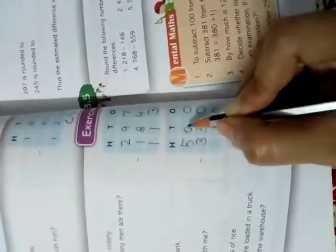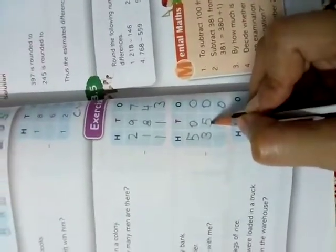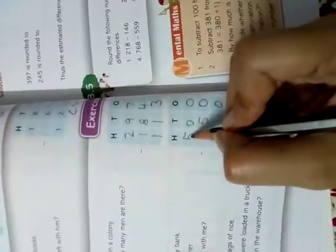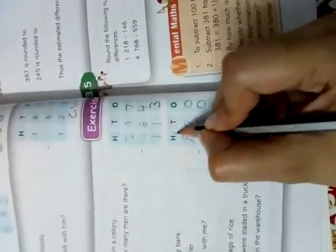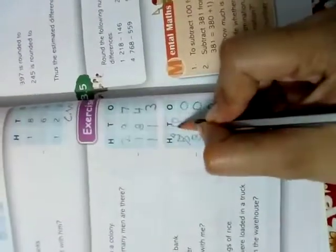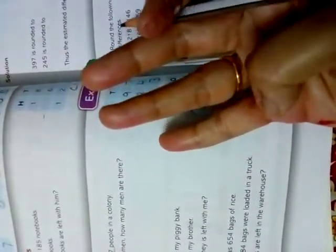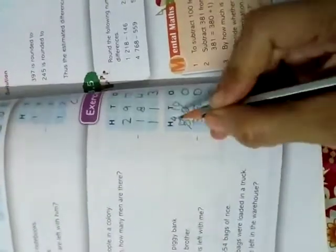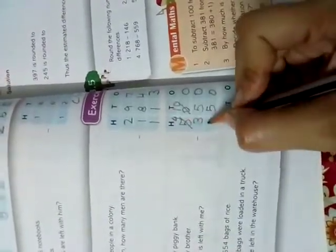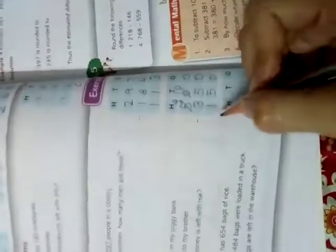And subtract. 0 minus 0, 0. 0 minus 5 possible? No. So, this 0 will borrow from 5. 5 will become 4. 0 will become 10. 10 minus 5. Count after 5 till 10. 6, 7, 8, 9, 10. So, here which number? 1, 2, 3, 4, 5. Write 5. What is remaining here? 4 minus 3 is 1. So, 150 rupees are left in your piggy bank.